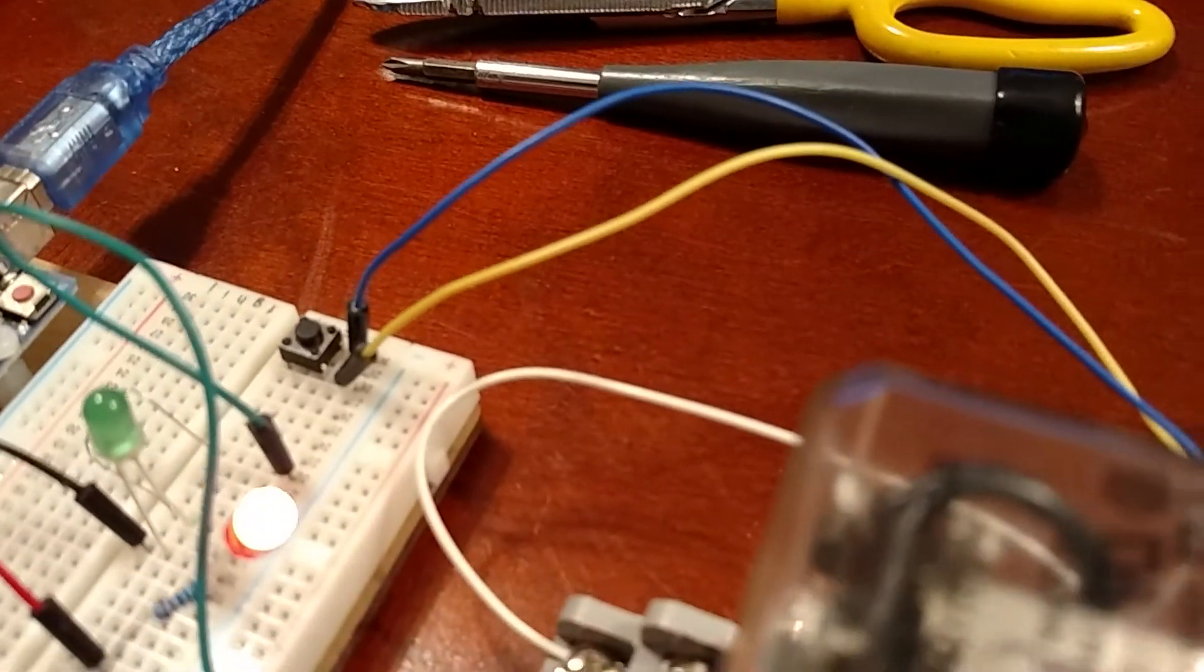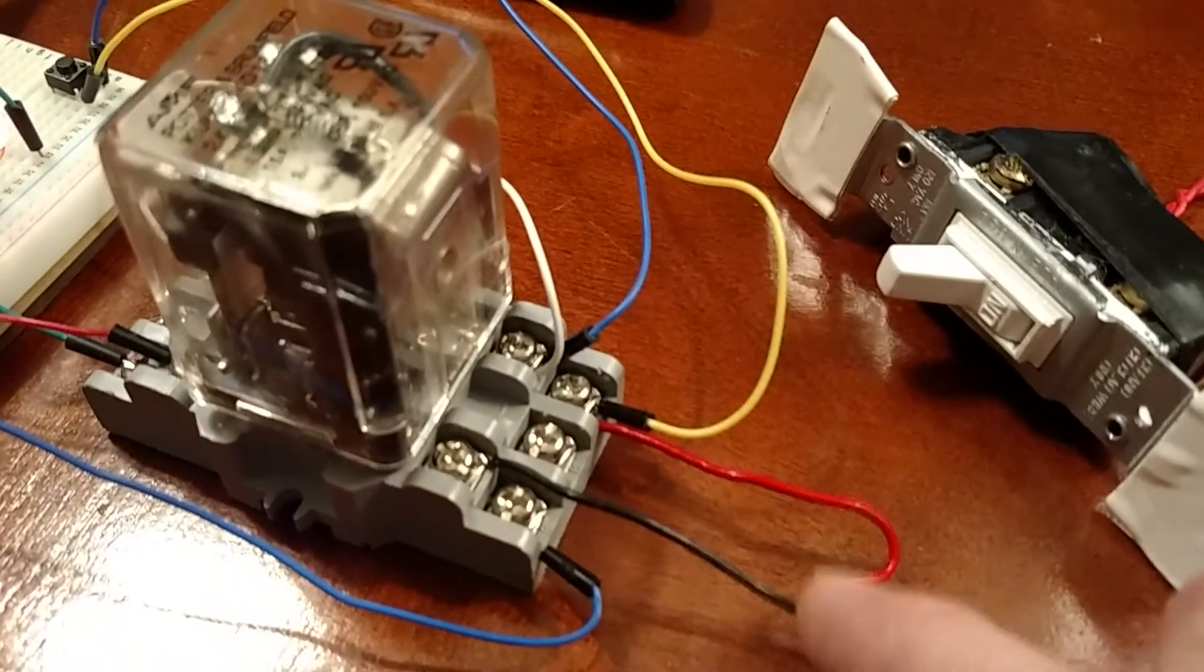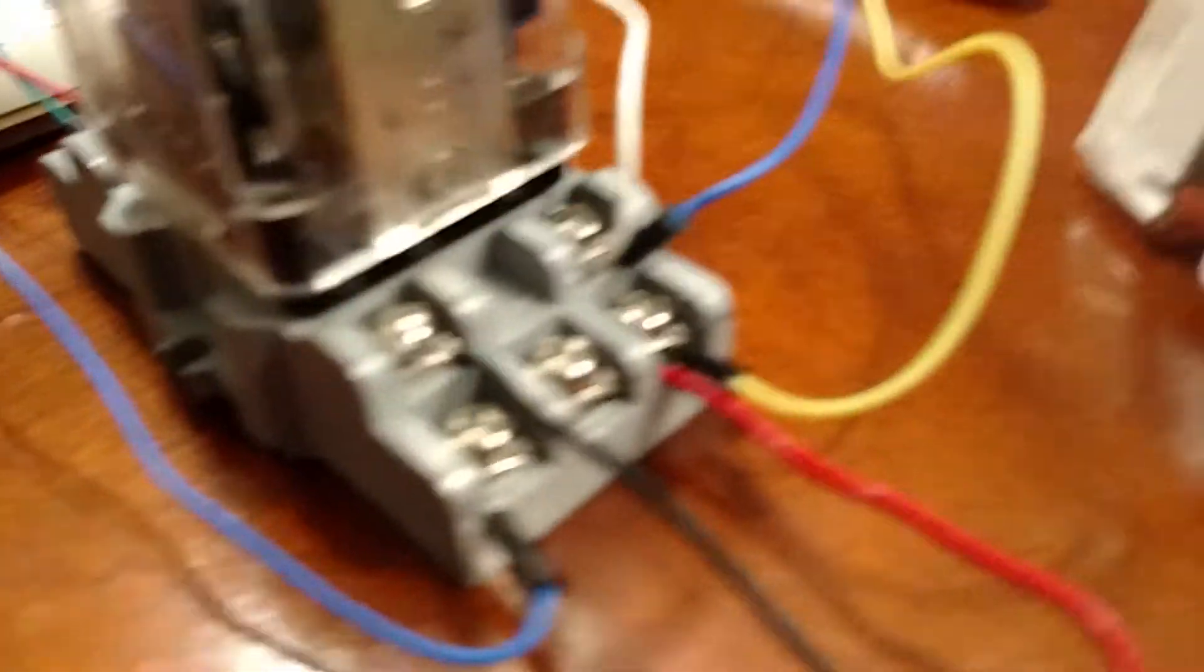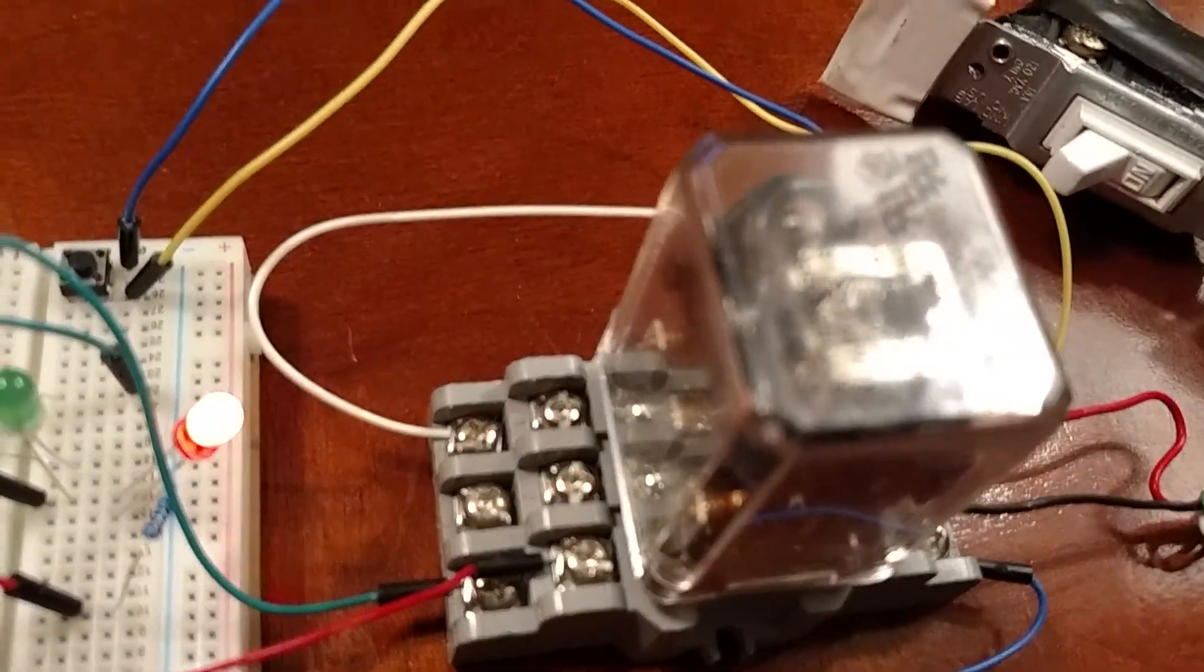On the other side of the start switch, we have this blue wire coming to the positive side of the coil. We also have a white wire running from the normally open side of the relay to the positive leg of the coil.